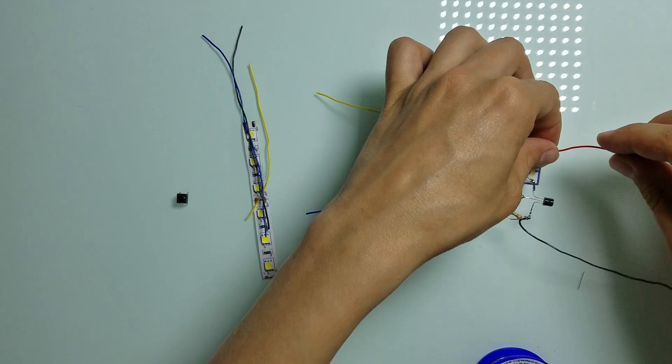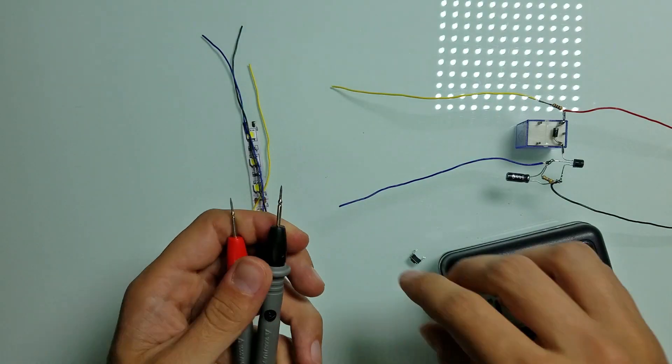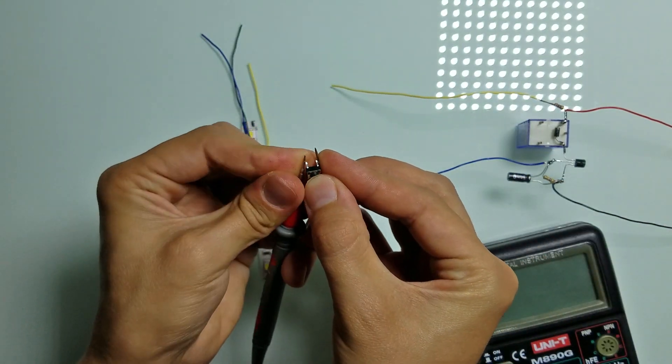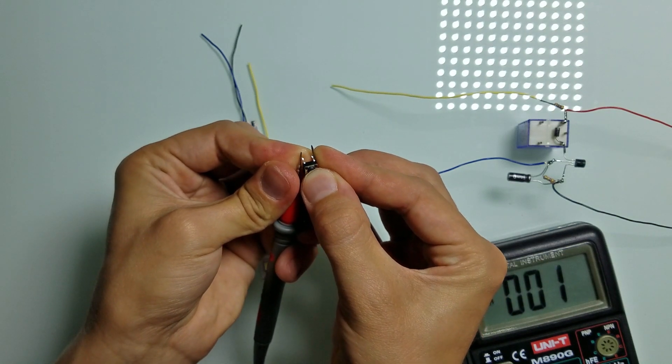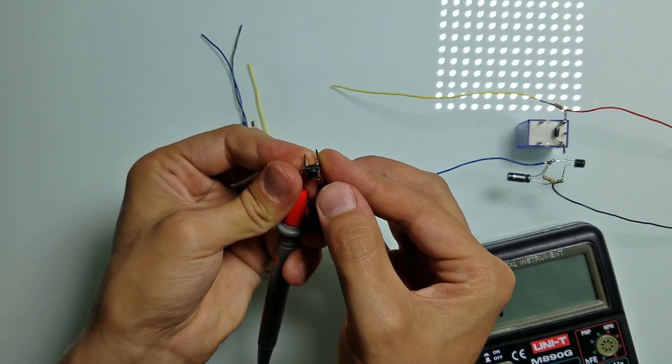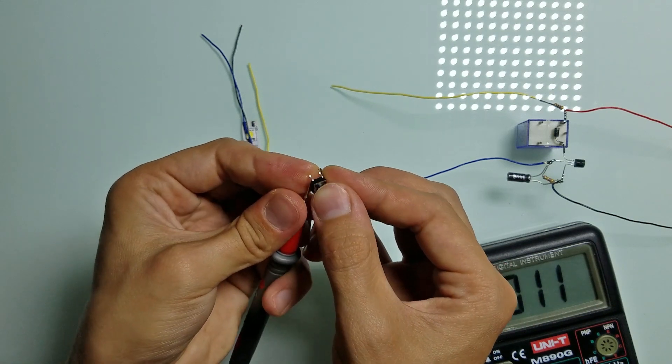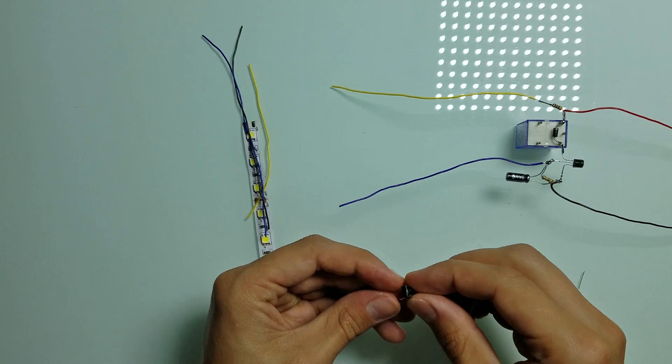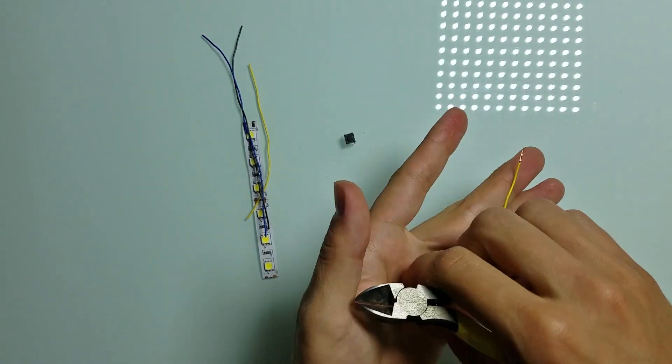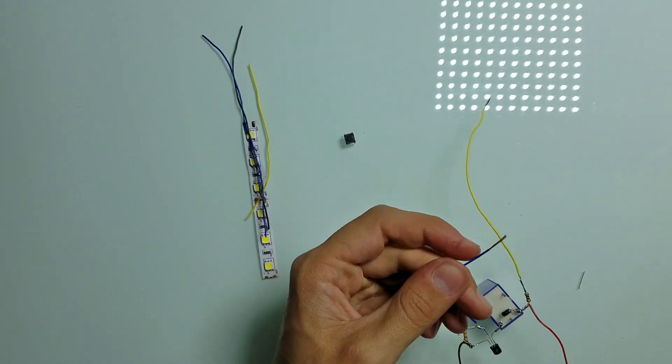And now it is time to connect a button. Let's test this button to make sure that it works. Also this test helps to understand how to connect the button. Ok, the button works. So let's strip the yellow and blue wires and connect them to the button.